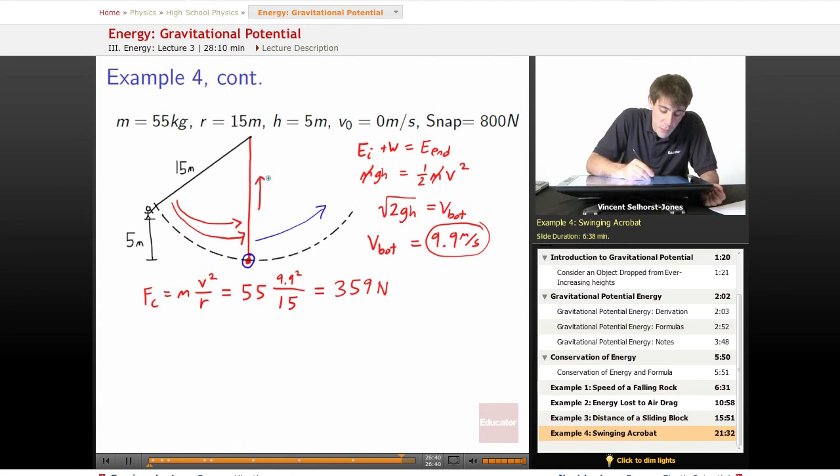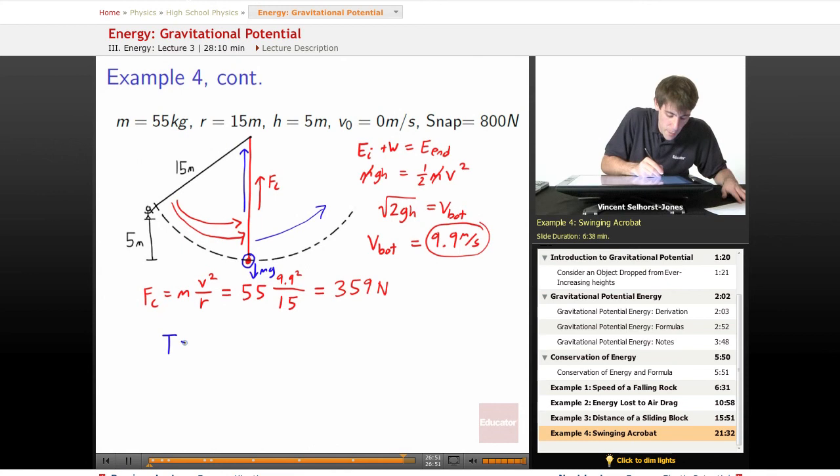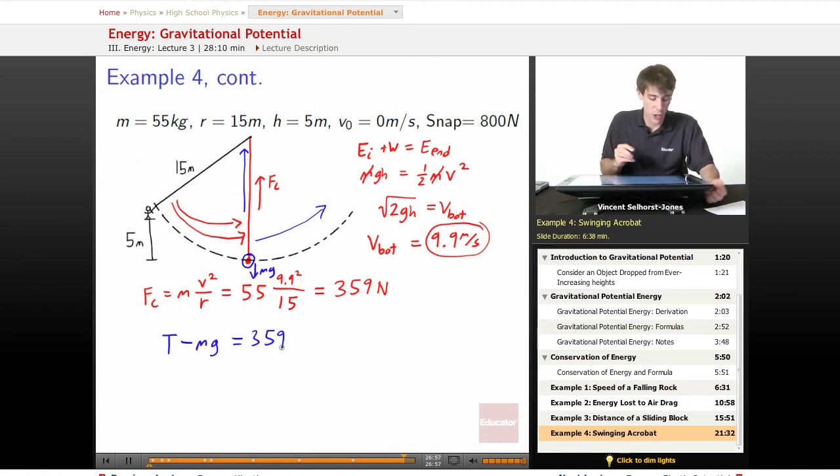The centripetal force is pulling this way. We've got tension pulling this way, and it has to also be able to beat mg. So we know that tension minus mg equals 359 newtons, equals that centripetal force. So tension equals 359 plus mg at the moment of maximum tension that that rope would experience if it were a safe, healthy rope. Remember, if it's not a safe, healthy rope, it might snap before we even get there, so the actual rope might not ever experience that tension because the most it's going to experience is 800 newtons before it snaps.